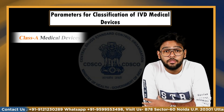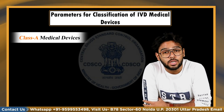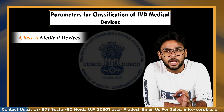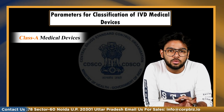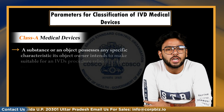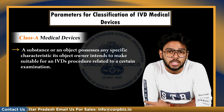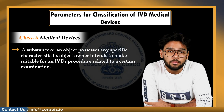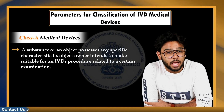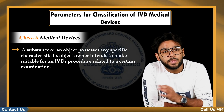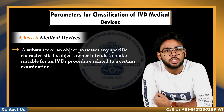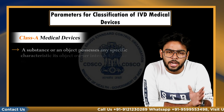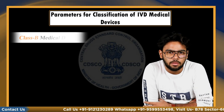Let's start with Class A. In vitro diagnostic medical devices used in IVD procedures shall be assigned to Class A in case it is intended to be used as a substance or an object that possesses any specific characteristics, and its object owner intends to make it suitable for IVD procedures related to a certain examination. A device specifically used for an IVD procedure for a variety of containers is also classed as a Class A device.